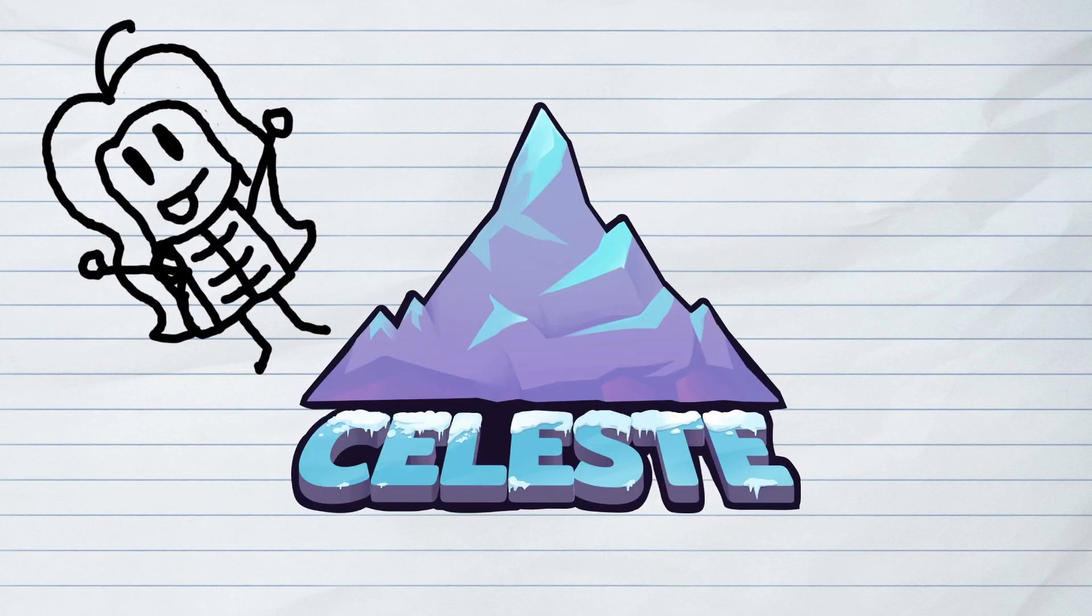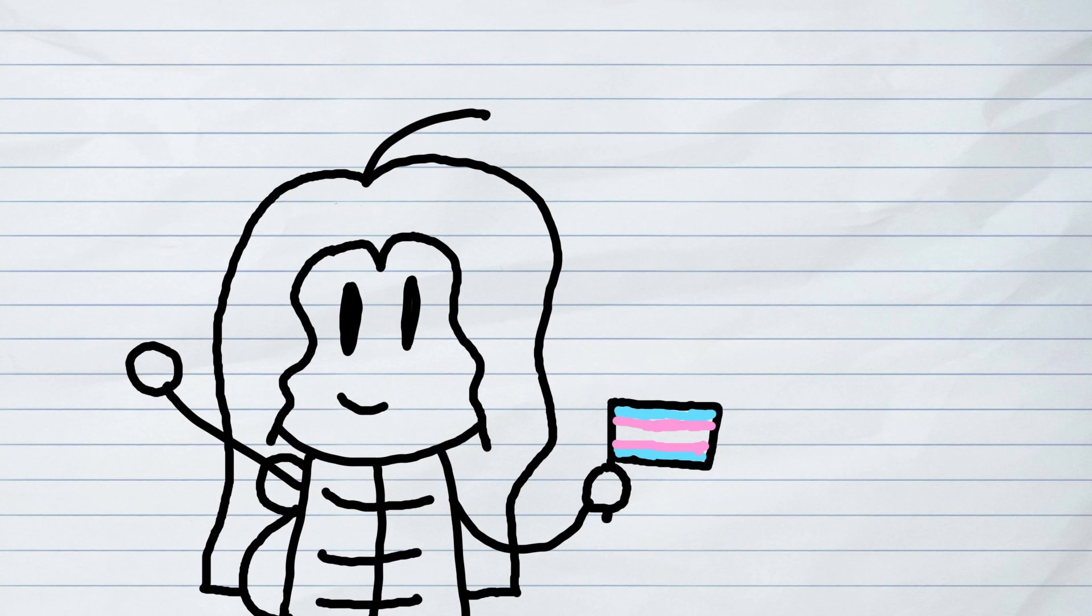Celeste is a 2D action platformer developed and published by independent studio Matt Makes Games. Released in 2018 on all major platforms, Celeste follows Madeline, a girl who suffers from depression and social anxiety, climbing the titular Celeste Mountain in hopes of overcoming the aforementioned problems. The main writer for Celeste, Maddie Thorson, has confirmed in a blog post that Madeline is transgender feminine, and it is also said in the blog post that the character indirectly represents Thorson's own experiences.